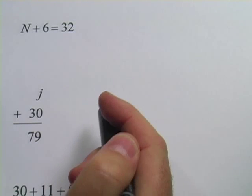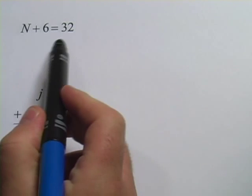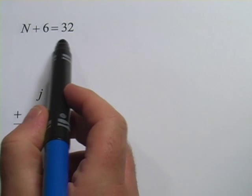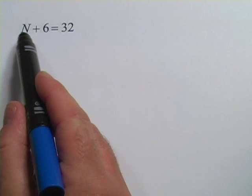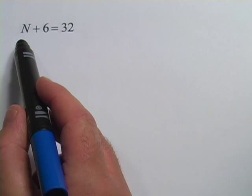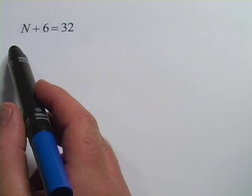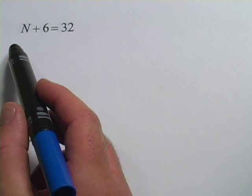These next problems are about missing numbers. So you see a number sentence, an equation here, and instead of having a number here, it's got a letter. And we're supposed to figure out what number that letter is. And these problems can be pretty confusing at first. So I want to show you two different ways to do them.